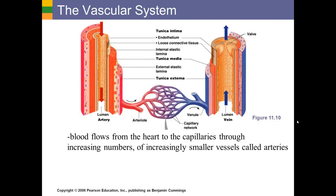This figure from your book illustrates the relationship between arteries, veins, and capillaries. Blood leaves the heart and flows through first very large arteries, which divide into smaller arteries and into still smaller arteries, eventually leading to the arterioles. Blood flows from the heart to the capillaries through increasing numbers of increasingly smaller blood vessels called arteries, starting with a few very large arteries then flowing into lots of small arteries, eventually to arterioles — the smallest arteries — that then lead to the capillaries.